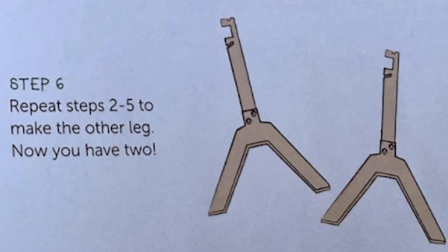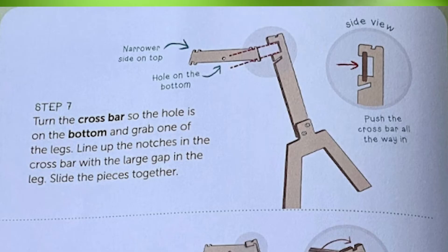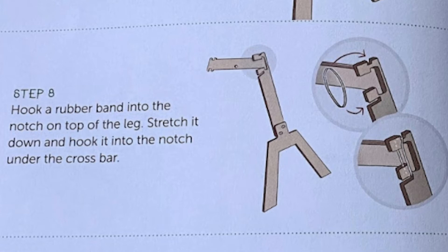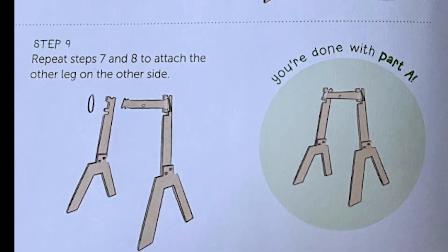Step six: repeat steps two to five to make the other leg. Now you have two. Step seven: turn the crossbar so the hole is on the bottom and grab one of the legs. Line up the notches in the crossbar with the large gap in the leg and slide the pieces together. Step eight: hook a rubber band into the notch on the top of the leg, stretch it down and hook it into the notch under the crossbar. Step nine: repeat steps seven and eight to attach the other leg on the other side. Now you're done with Part A and you have your frame built.